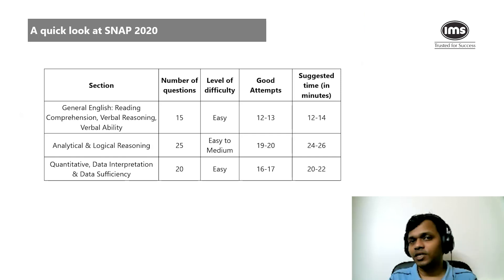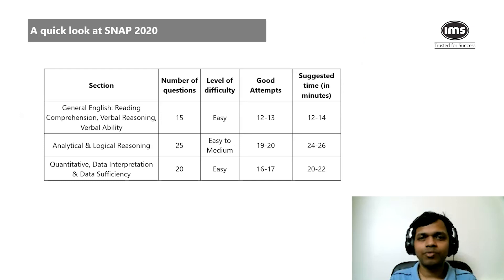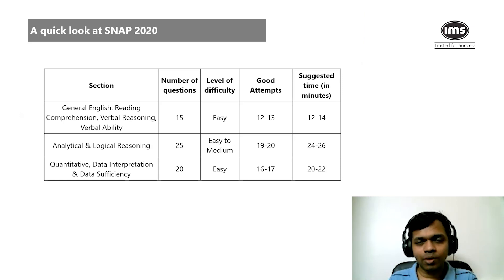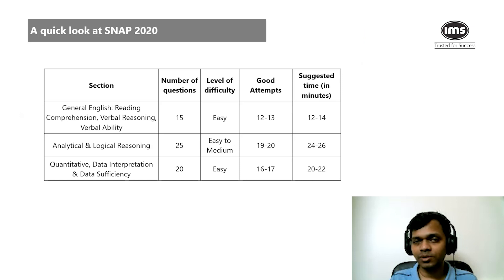The second section, analytical and logical reasoning, had 25 questions. Overall difficulty was easy to medium — some questions were simple, some moderate. A good attempt is about 19 to 20 questions, and the suggested time is around 24 to 26 minutes — roughly one minute per question. For the quant section with 20 questions, allot about 20 minutes. The order in which you do sections is completely up to you — English, logic, quant, or any order based on your strengths.